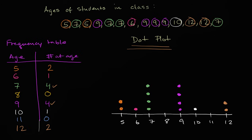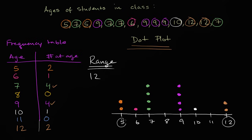We can also ask: what is the range of ages in the classroom? The range is the maximum data point minus the minimum data point. From the dot plot, the maximum age is 12 and the minimum age is five, so there's a range of seven. You can see the same from the frequency table — maximum is 12, minimum is five, and 12 minus five is seven.